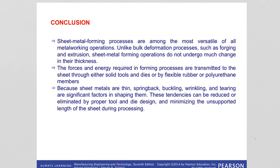In conclusion, we learned about sheet metal forming and the required processes. We also learned different types of techniques such as rubber forming, hydroforming, deep drawing, and different parameters like springback. We learned how to minimize defects like wrinkling, tearing, and springback. We also learned about the spinning process.